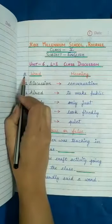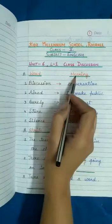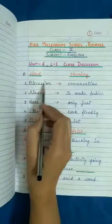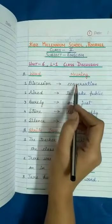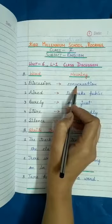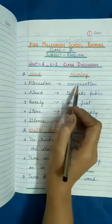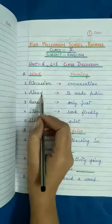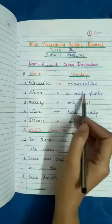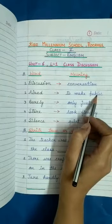First part, Part A, consists of word meanings. The first word is Discussion, meaning conversation — kisi topic pe baatchit. Second, Aired, meaning to make public — kisi cheez ko public karna.